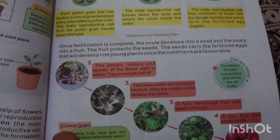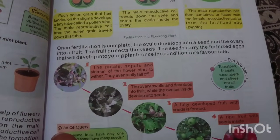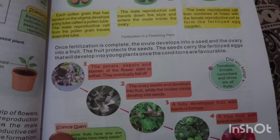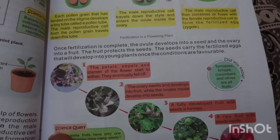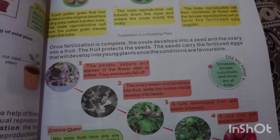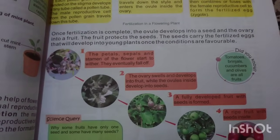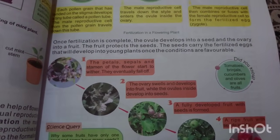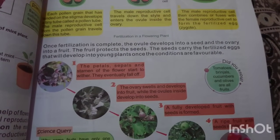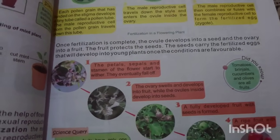The ovules inside develop into seeds. A fully developed fruit with seeds inside — tomatoes, oranges, mangoes, and olives are all examples of fruits.